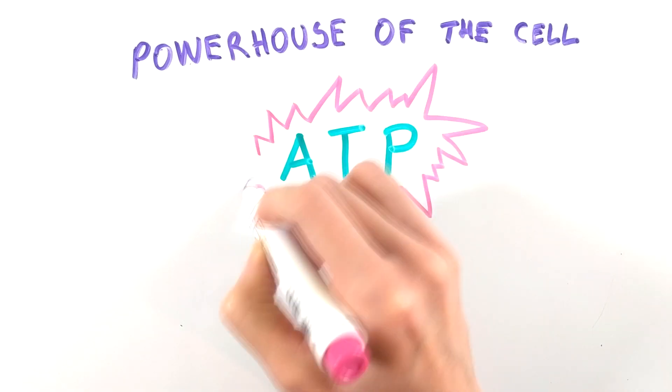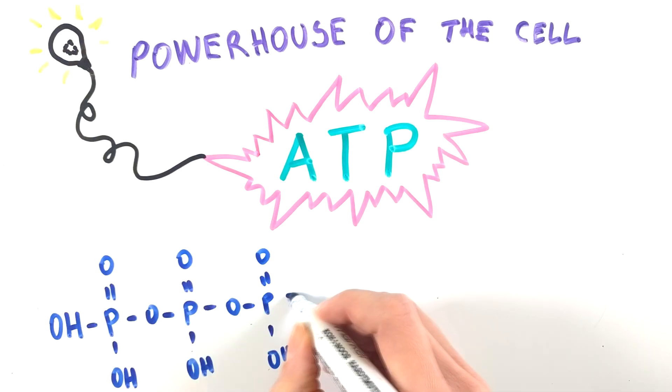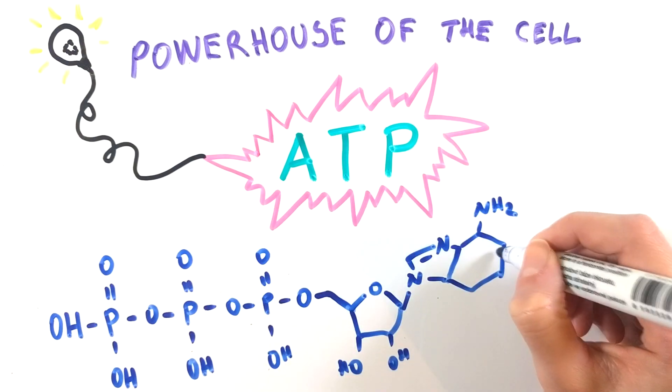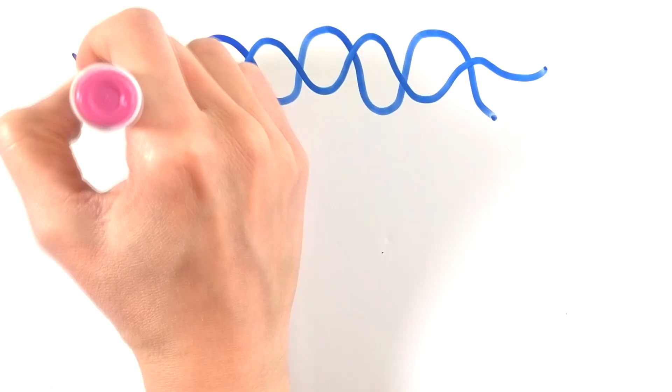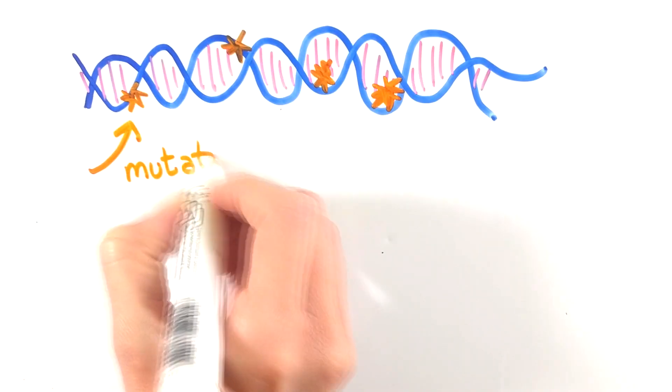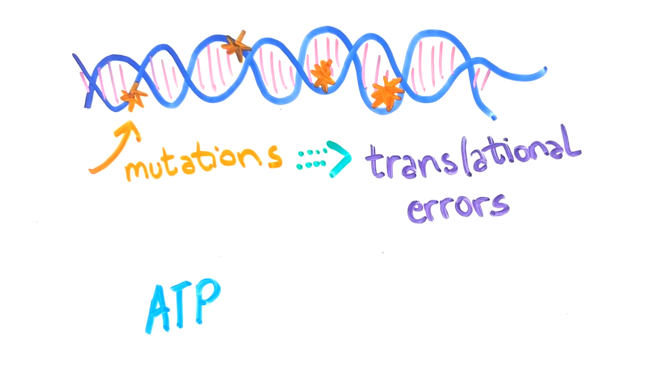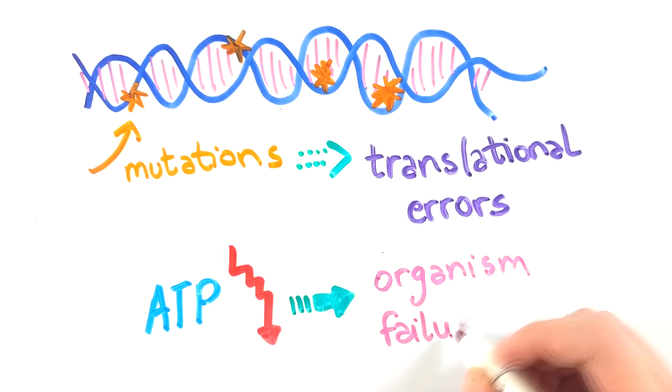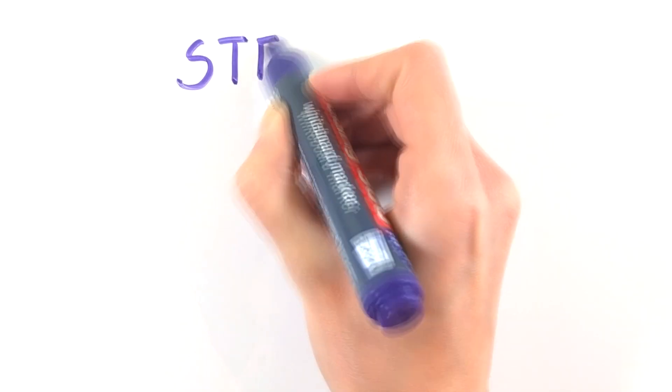Mitochondria are known as the powerhouse of the cell because it provides the ATP, the main source of energy for all cellular processes. Random mutations of DNA lead to translational errors and consequently to incorrectly synthesized proteins. Cells become deprived of energy which furthermore causes reduced organ function and eventually affects the whole organism.